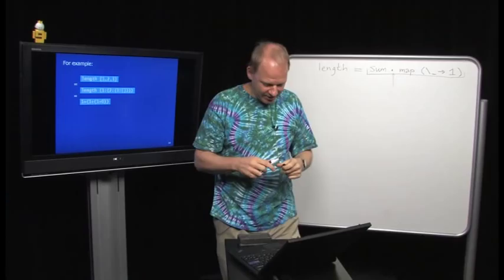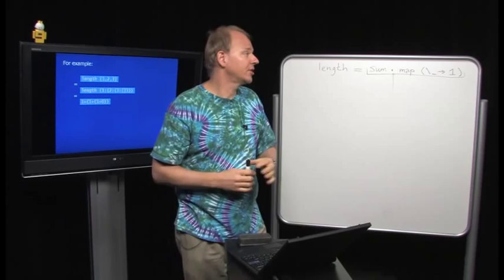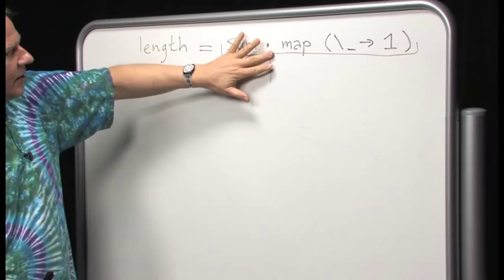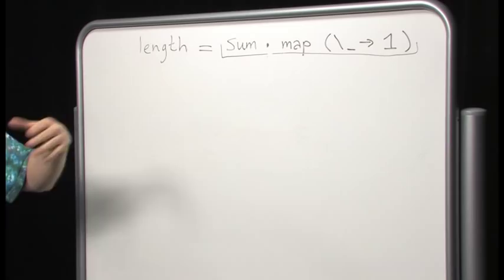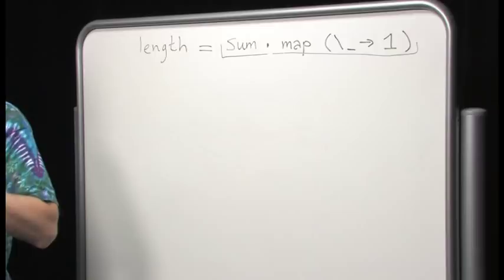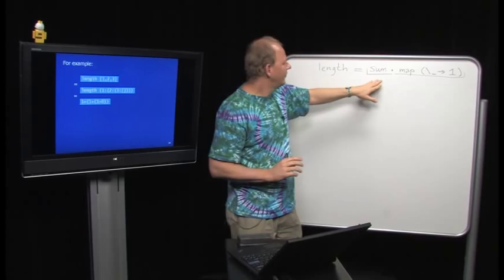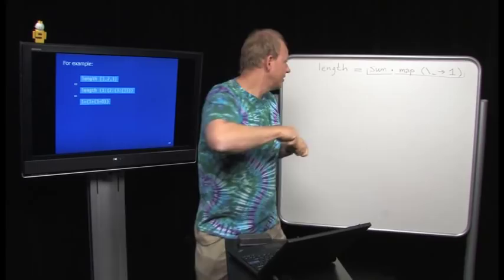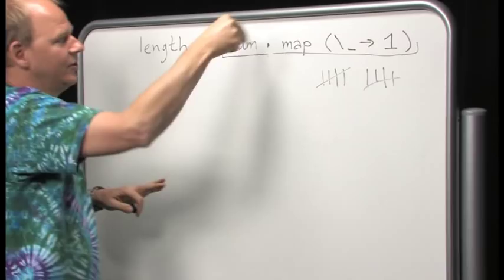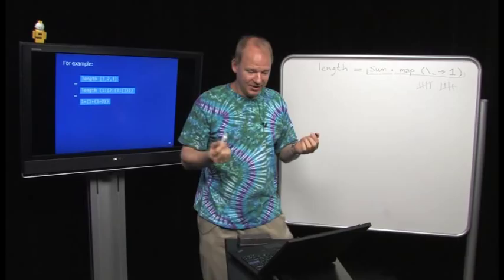In a later lecture we'll go deeper into calculating the definition of length this way from a specification. The map-then-sum version is arguably clearer — it's like counting by replacing everything with 1 and summing. The foldr version requires inventing the combining function, whereas the composition version is more immediately readable.